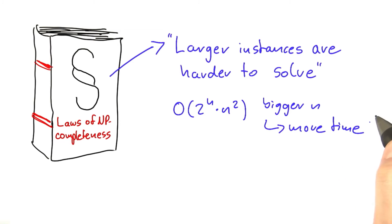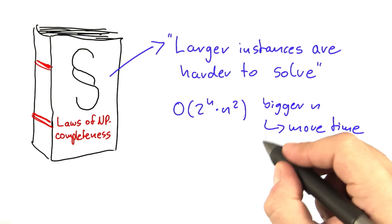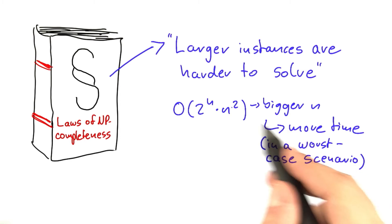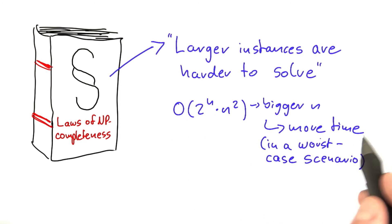What this law here means is bigger n, more time in a worst-case scenario. So if you have a running time like this, a bigger n, bigger input size means more running time required for the algorithm in a worst-case scenario.